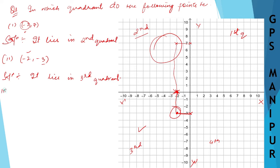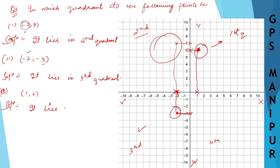Roman number 3 is the point (1, 6). So 1 is for x, it is here, and 6 is for y, it is here. These two points are going to meet, and this point lies in the first quadrant.